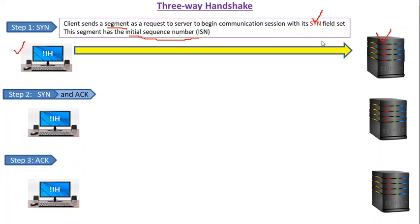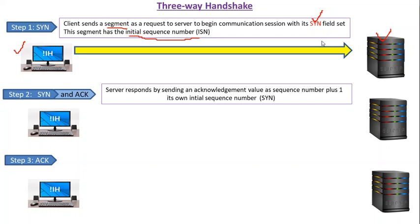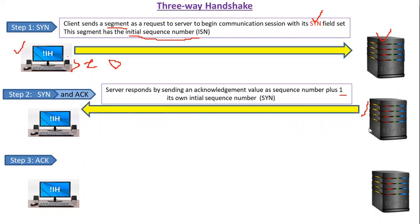After receiving the segment with the initial sequence number from the client, the server responds by sending an acknowledgement. The acknowledgement field value is calculated by adding one to the sequence number sent by the client node. So the client initially sent sequence number zero, the server added one to get one, and this acknowledgement value of one is sent back to the client. In addition, the server also generates a sequence number for its own use, and this segment goes back to the client node.